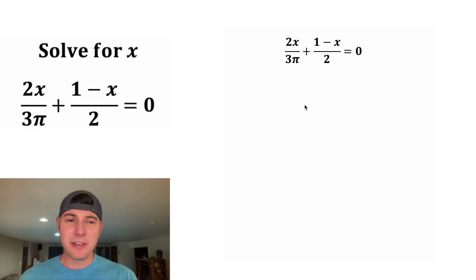First thing, I don't really like fractions, so let's get rid of these denominators. And we're going to do that by multiplying everything by the least common denominator. In this case, between 3π and 2, 6π is the least common denominator. So we're going to multiply everything by 6π.